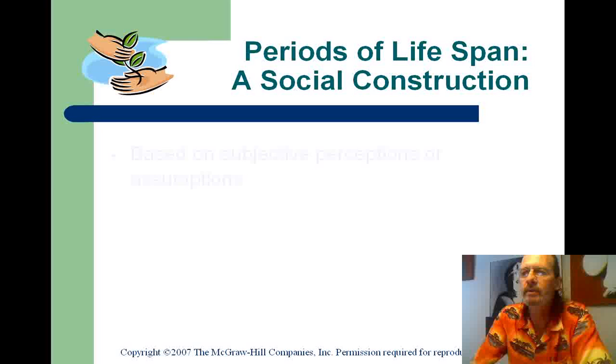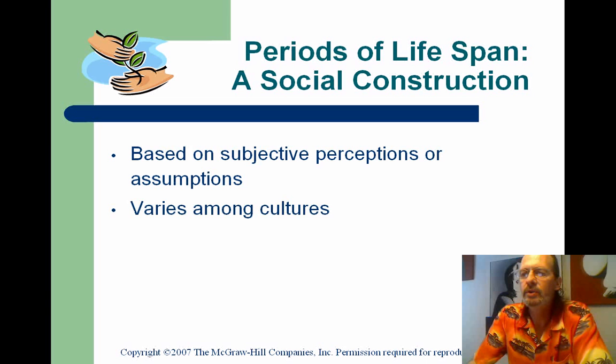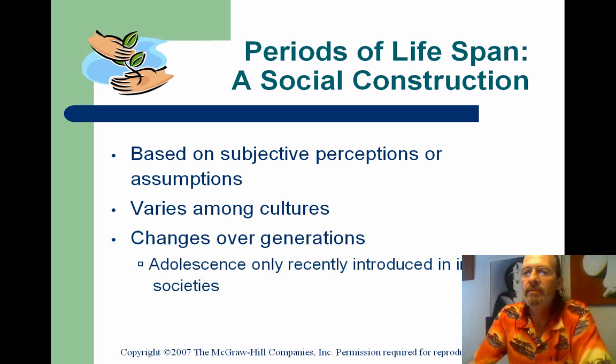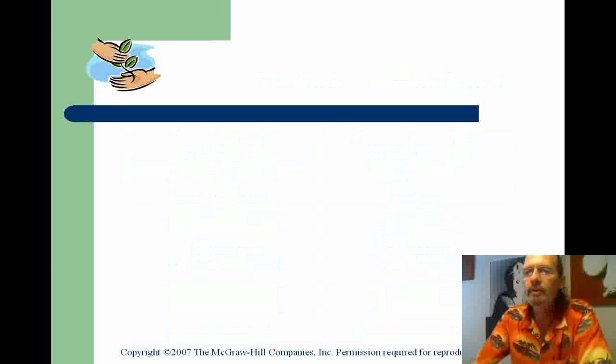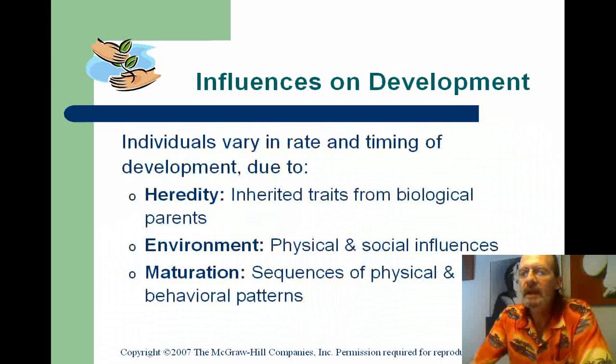The periods of the lifespan are a social construct — we just decided that's kind of how they are. Different people have different social constructs across cultures and societies. Know the periods of the life span and how the length of each one relates to its importance. Heredity and environment — nature and nurture — and maturation also impact how we do things.